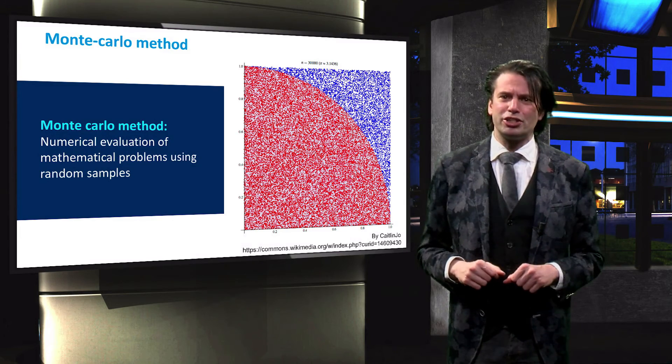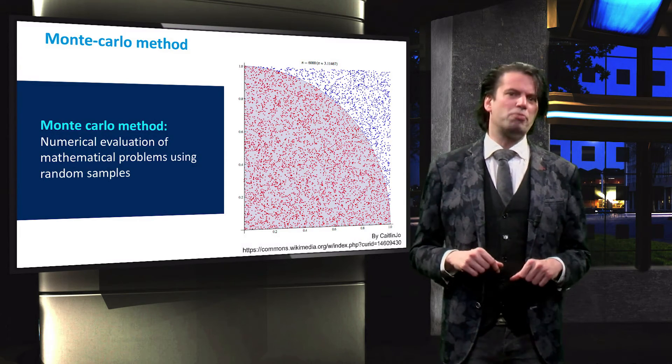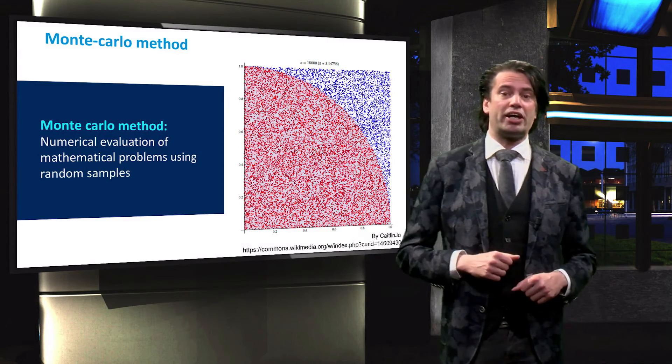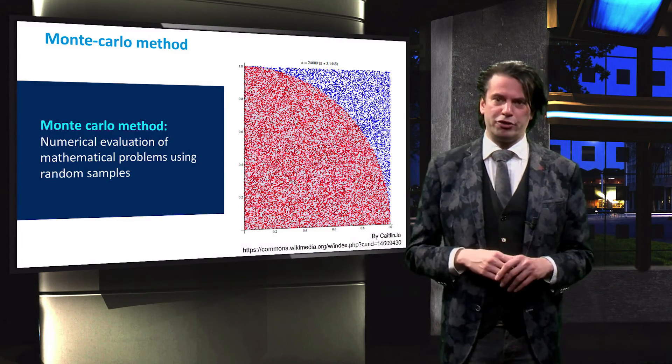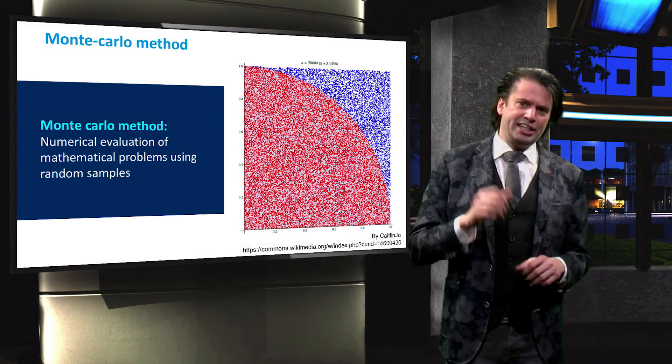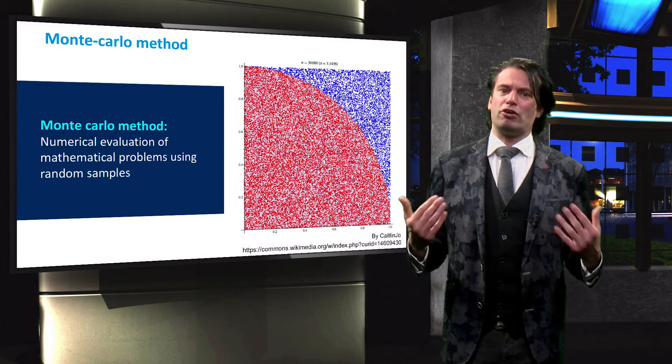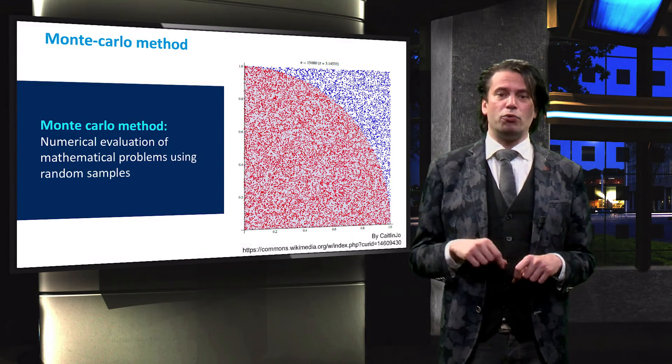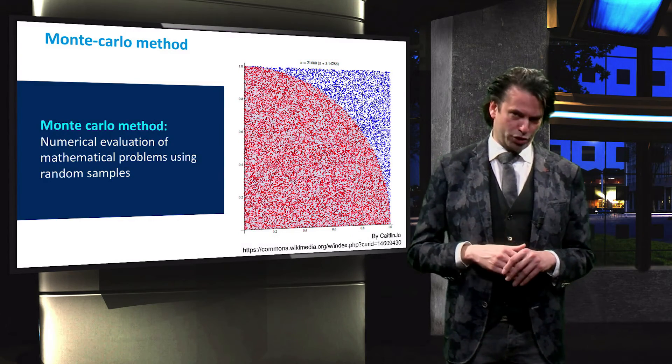By randomly generating dots in the square and relating the number of dots inside the circle to the number of dots outside the circle, we can approximate the value of pi. We can see that as the total number of counts increases, our approximation gets closer to the real value of pi, which is 3.142.